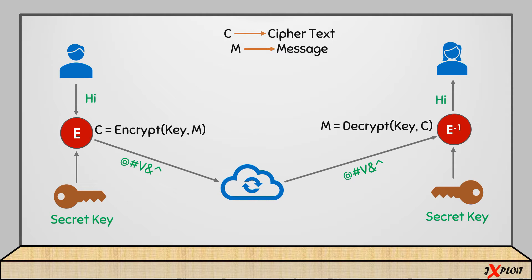There will be attackers or hackers present in the untrusted medium — the internet. If someone gets the secret key, they will be able to decrypt the message, affecting the confidentiality, integrity, and availability of data. To add security, the secret key is not sent along with the ciphertext; instead, it is shared separately between both parties — the sender and receiver. The same key is used for both encryption and decryption, which is why it is called symmetric key cryptography.